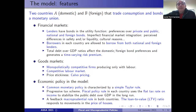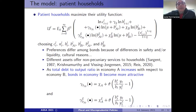The goods market is quite standard — there is only one production factor, which is labor, hired in a competitive labor market. There is price stickiness in the Calvo fashion. We also allow for different rules in macroprudential, fiscal, and monetary policy.